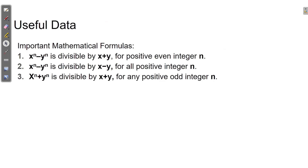Here we have some important mathematical formulas to solve this type of question in GATE. Formula 1: x^n minus y^n is divisible by (x plus y) for positive even integer n. Formula 2: x^n minus y^n is divisible by (x minus y) for all positive integer n. Formula 3: x^n plus y^n is divisible by (x plus y) for any positive odd integer n.